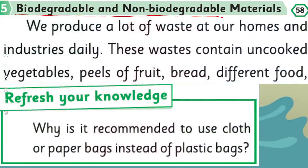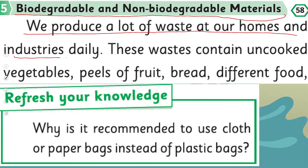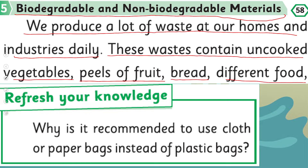Biodegradable and non-biodegradable materials. We produce a lot of waste at our homes and industries daily. These wastes contain uncooked vegetables, peels of fruit, bread, and different foods. On a daily basis we produce a lot of waste — apple peels, banana peels, uncooked food, peels — all of these we throw in the bin and they are waste.